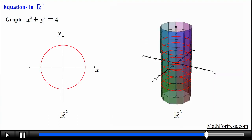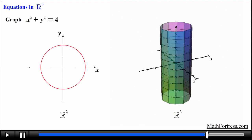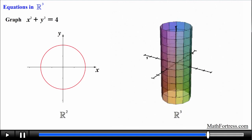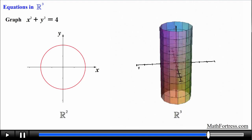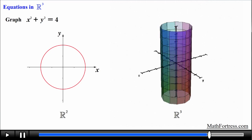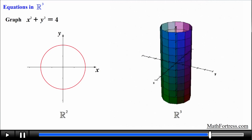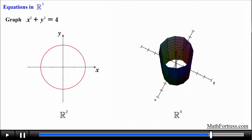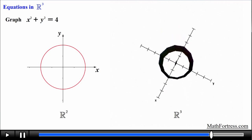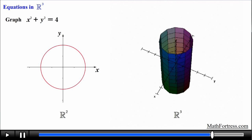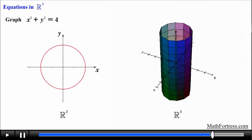We connect the circles with rulings to obtain a cylinder centered on the z-axis. So in R squared the equation x squared plus y squared equals 4 represents a circle, and in R cubed it represents a cylinder. This example illustrates the importance of specifying the coordinate system, since it ultimately determines the graph of the equation.